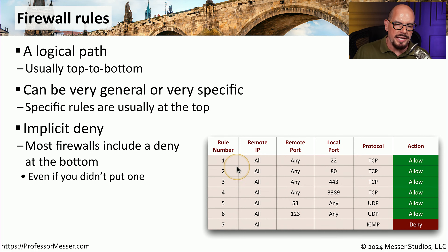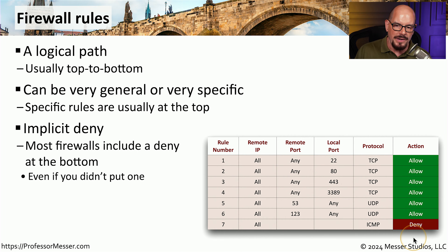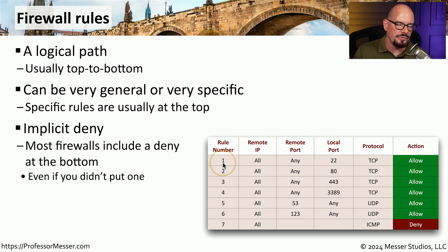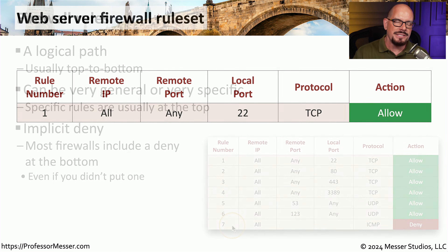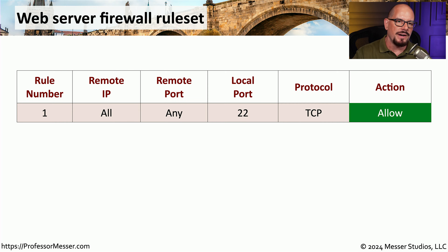In this rule set, there is an implicit deny at the bottom. You can imagine a rule eight at the bottom of this firewall rule set that denies all other traffic that didn't match any of the rules from rule number one through seven. Let's step through this firewall rule set and see what each line is providing us for security.